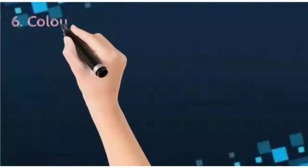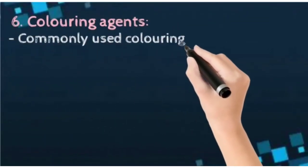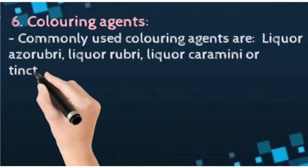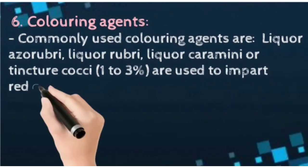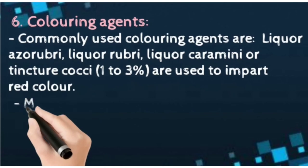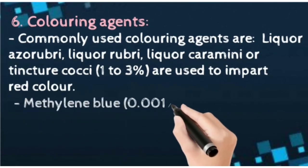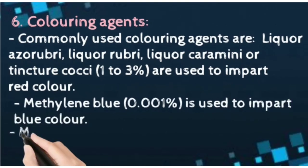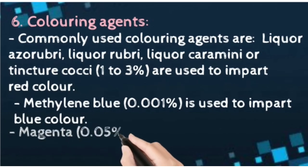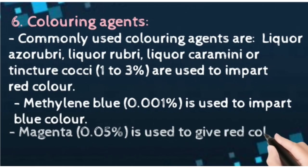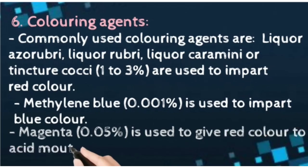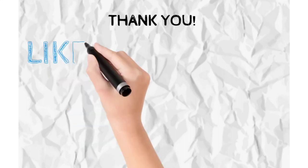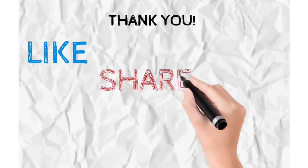Coloring agents commonly used include liquor rubri and tincture cocae, which impart red color, and methylene blue, which imparts blue color. Magenta is used to give red color to acid mouthwashes. Thank you for watching. Do like, share, and subscribe, and tell us in the comment box which topics you would like us to make a video on.